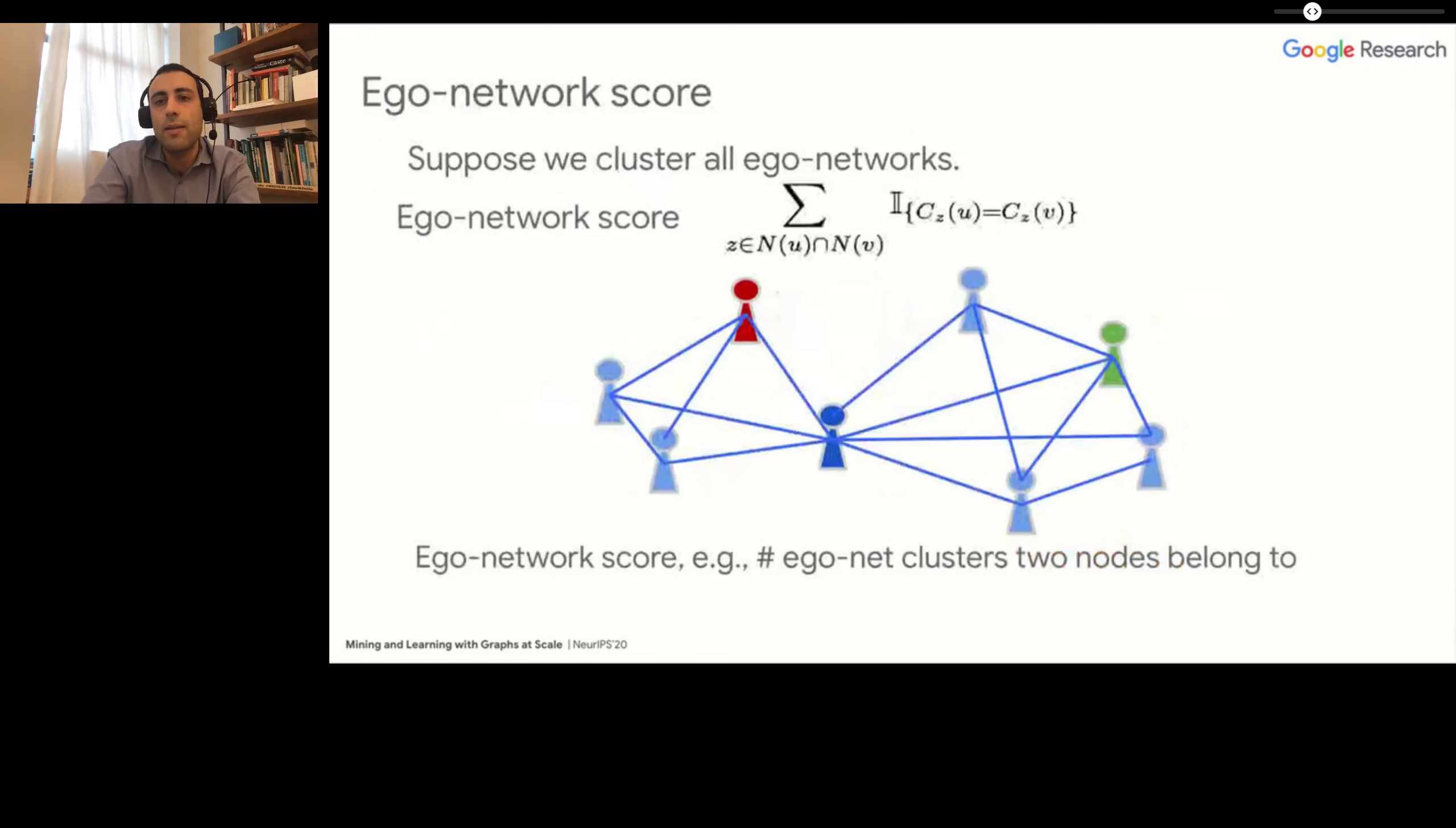Here in particular, we have defined a similarity score which takes into account how many times two nodes belong to the same cluster from the point of view of the ego network of common neighbors of these two nodes. This can be seen as a generalization of the count of common neighbors, where you give a score to the common neighbors depending on the clustering structure of the ego network of their common neighbors.